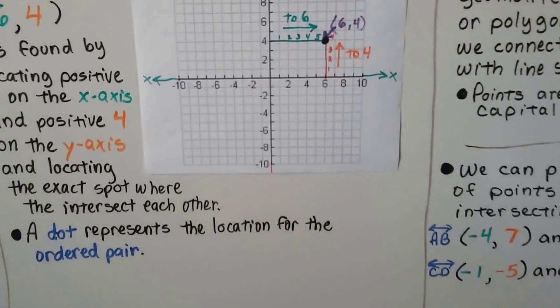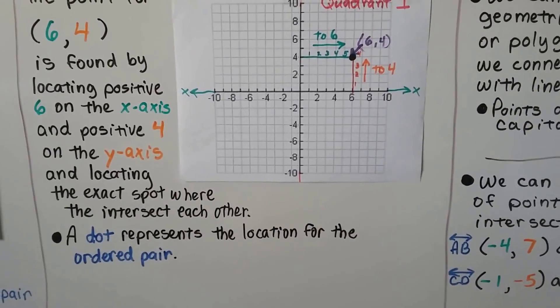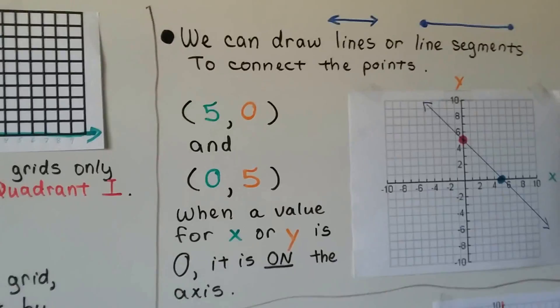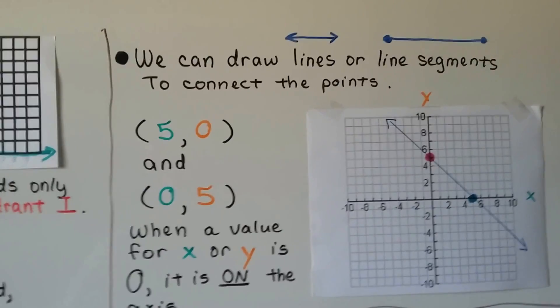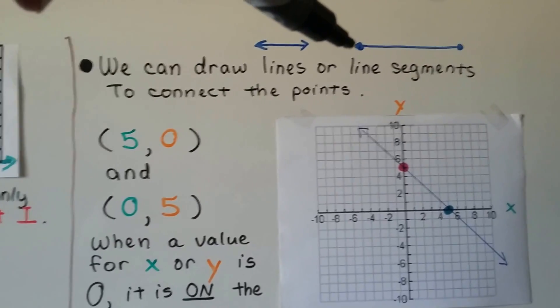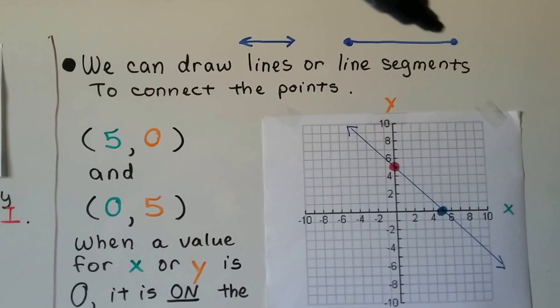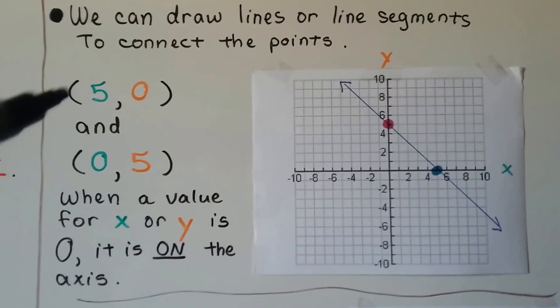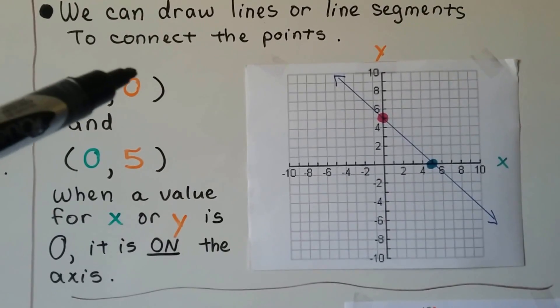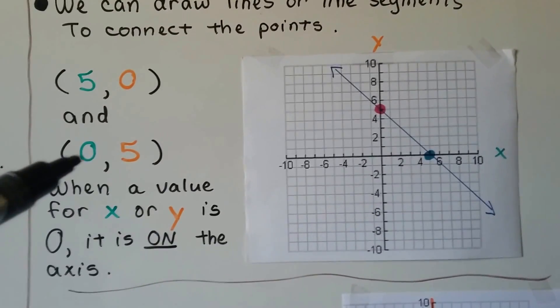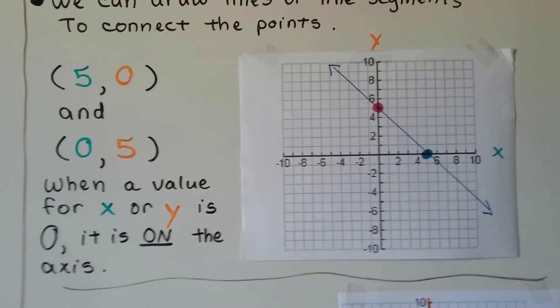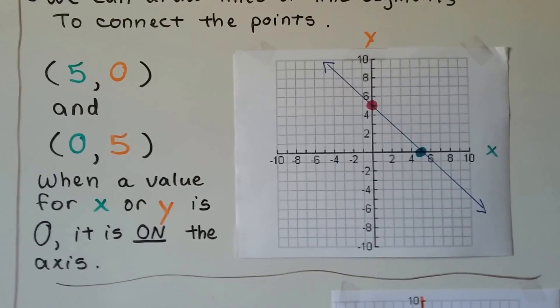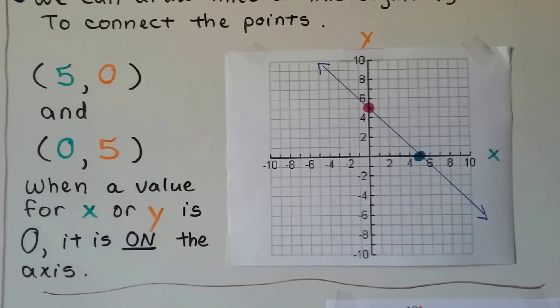And put a dot to represent the location for the ordered pair. We can draw lines or line segments. Remember, lines have arrows on each side, line segments have endpoints. And we can connect points. When a value for x or y is 0, it's on the axis.